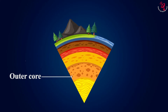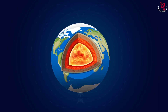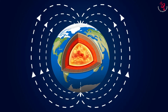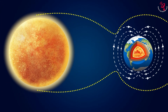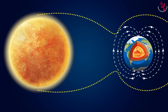Outer core. This layer is in a liquid state at a temperature of 5,000 degrees Celsius. This layer is mostly made of iron and nickel. These metals are in a liquid state due to intense heat. The outer core is always in constant circular motion, which creates a magnetic field around the Earth. This magnetic field protects our Earth from the sun's wind. If there is no magnetic field in this core, our Earth could not have an atmosphere, oceans, and life.